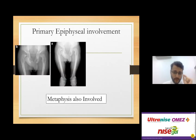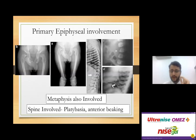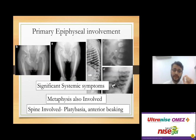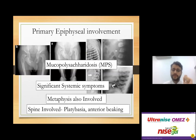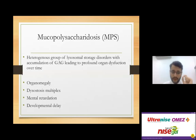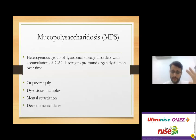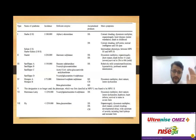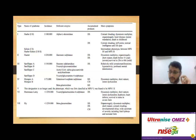When metaphysis is also involved and the spine has platybasia with anterior beaking, with significant systemic symptoms — unlike most skeletal dysplasias where systemic features are absent — this is mucopolysaccharidosis. These are a heterogeneous group of lysosomal storage disorders with accumulation of glycosaminoglycans, causing profound organ dysfunction, organomegaly, and mental retardation in various combinations depending on the type. A genetic evaluation is extremely important to determine life expectancy.